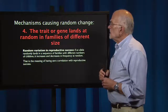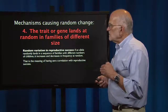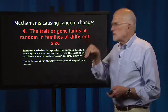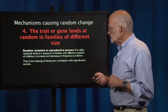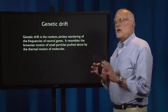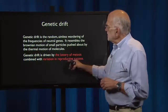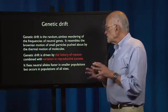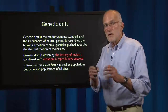The fourth mechanism is that a trait or gene lands at random in families of different size — that is what we mean by random variation in reproductive success. If an allele randomly lands in a sequence of families with different numbers of children, it will increase or decrease at random in frequency, producing a zero correlation with reproductive success. This produces genetic drift: the random, aimless wandering of frequencies of neutral genes, resembling Brownian motion driven by the lottery of meiosis combined with variation in reproductive success. Genetic drift fixes neutral alleles faster in smaller populations but occurs in populations of all sizes.